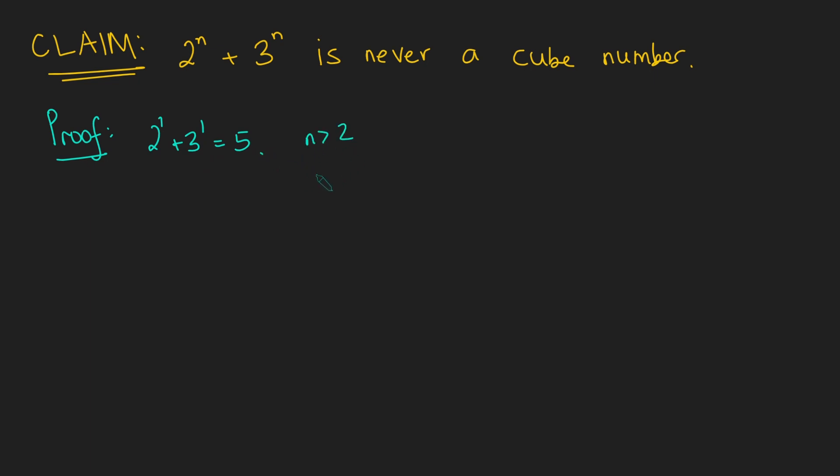What about if n is bigger than or equal to 2? We're going to make use of the fact that 3 to the n is definitely going to be at least 3 squared. And in fact, it's going to be a multiple of 3 squared. So if I look at this mod 9, if I look at 2 to the n plus 3 to the n, that's just going to be the same as 2 to the n mod 9, because 3 to the n will be a multiple of 9.